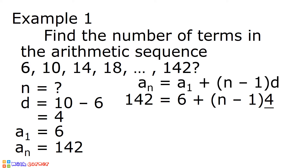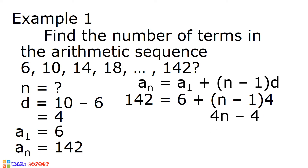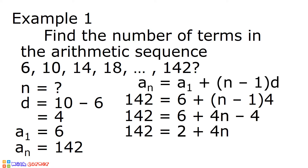We need to distribute 4 to n minus 1. 4 times n minus 1 is equal to 4n minus 4. We have 142 is equal to 6 plus 4n minus 4. Let us combine 6 and negative 4, and the answer is positive 2. So 142 is equal to 2 plus 4n.